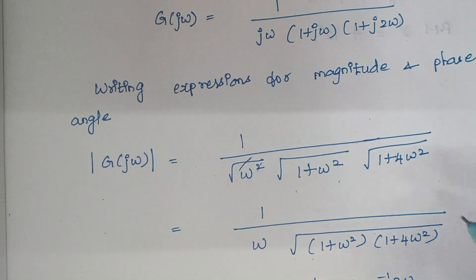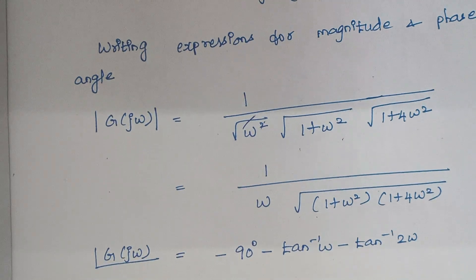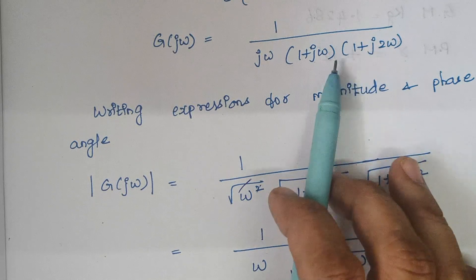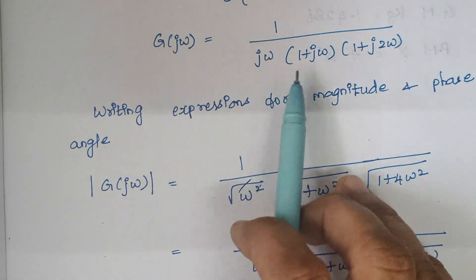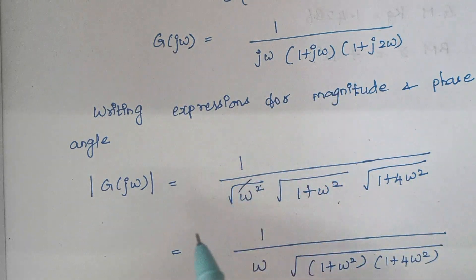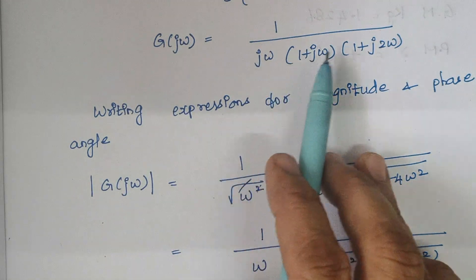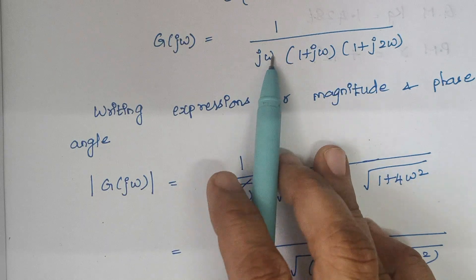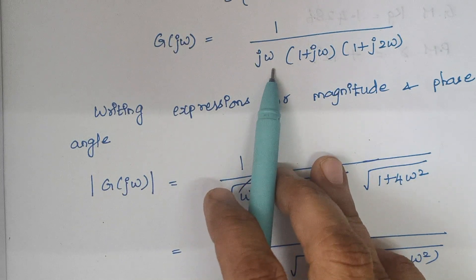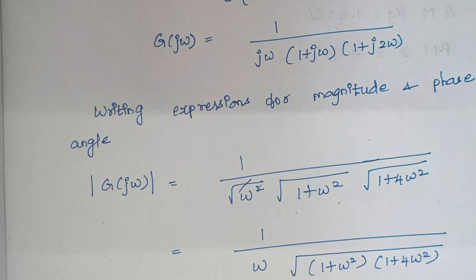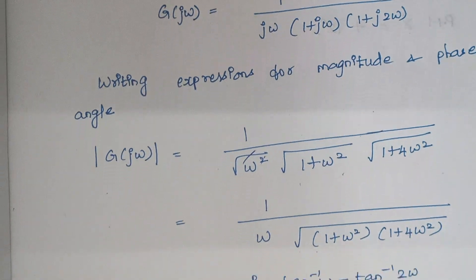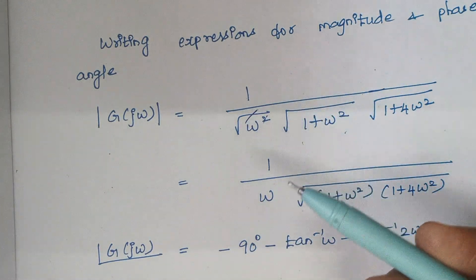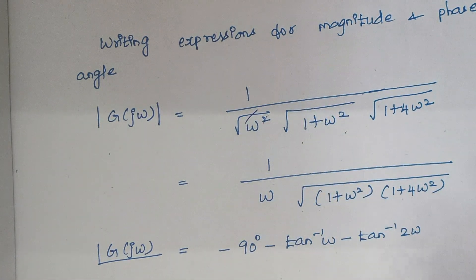Now proceeding to the phase angle. All 3 terms lie in the denominator. When we shift these 3 terms to the numerator, there will be a minus sign in front of all of them. Here, tan inverse of omega by 0 is infinity, and tan inverse of infinity is 90 degrees. Since the term is in the denominator and we are shifting it to the numerator, it becomes minus 90 degrees.